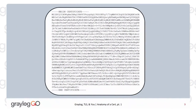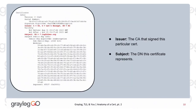I will personally ship a Graylog t-shirt to anyone who can read the raw certificate and tell me what the common name is. We use OpenSSL commands to parse the file, which spits out the actual structured human-readable data. A few key lines are the issuer and subject. The issuer is the certificate authority that signed this certificate.